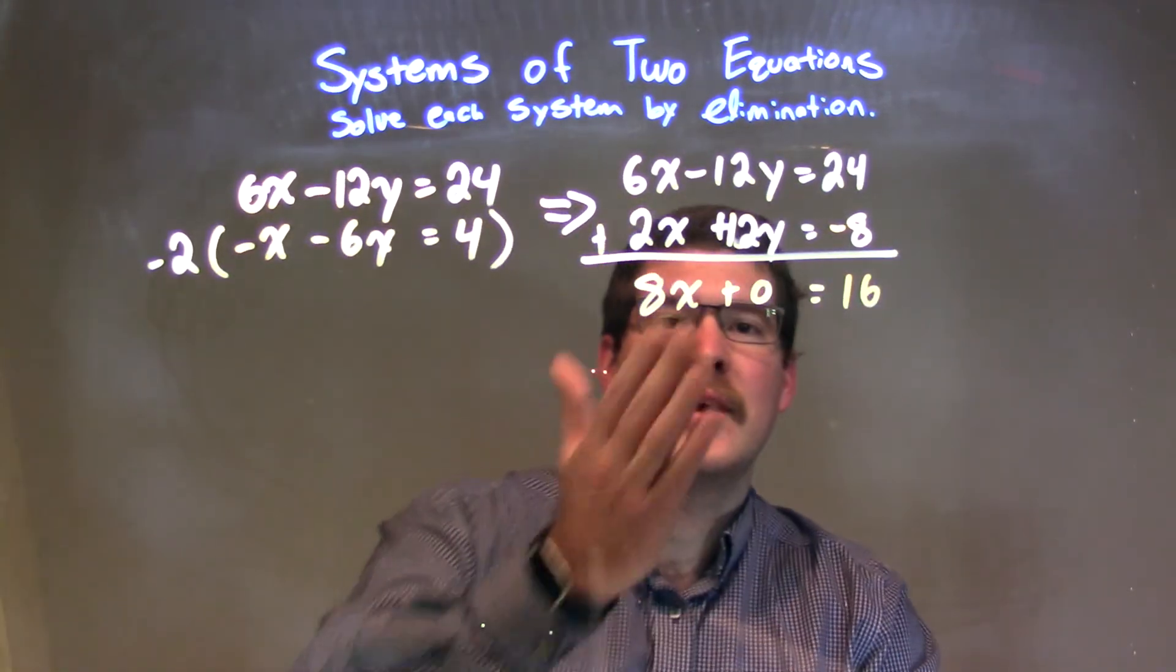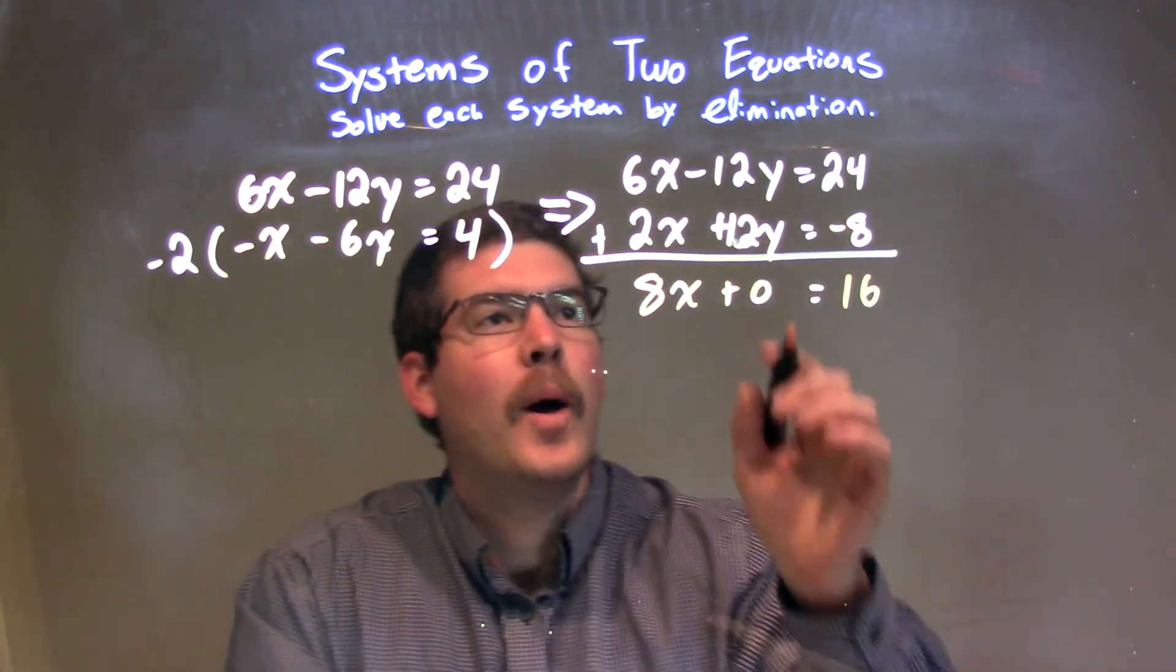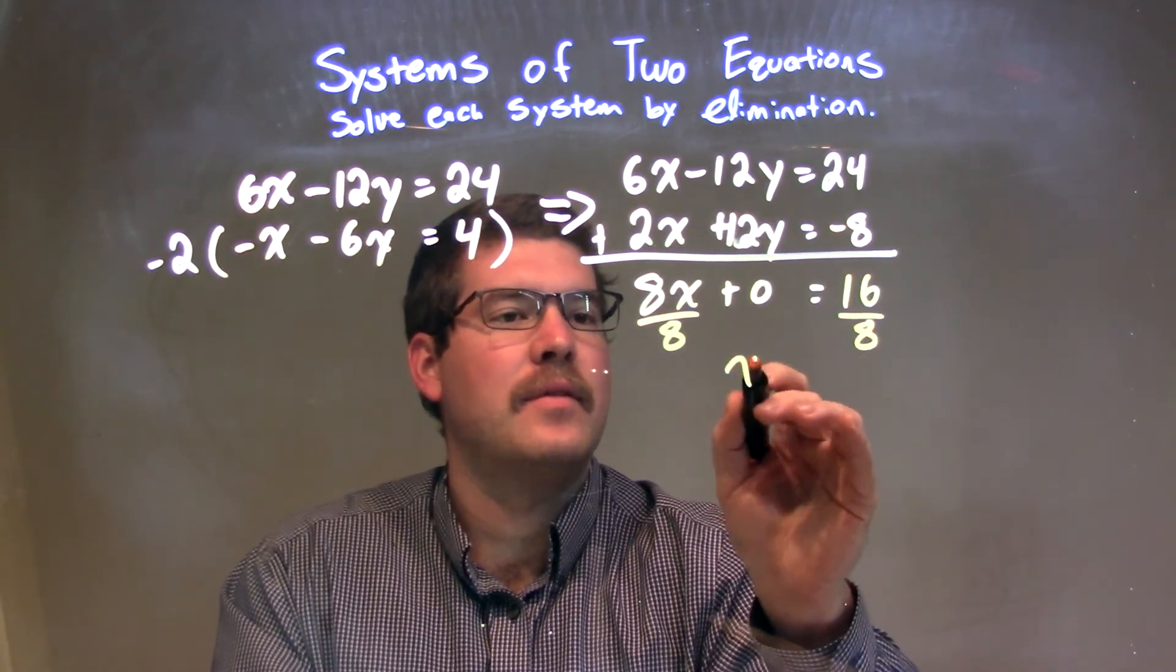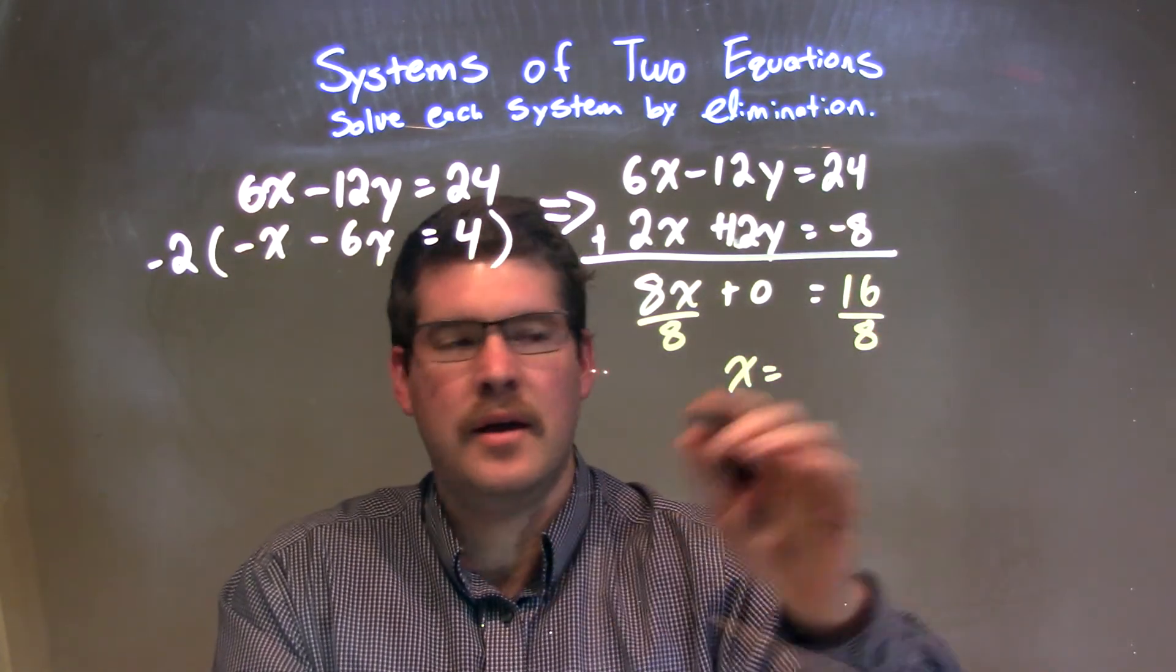From here, we don't really care about the 0. We can just eliminate that. Pun intended. I'm going to divide by 8 on both sides to get x by itself. That gives me x equals 16 divided by 8, which is 2.